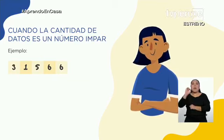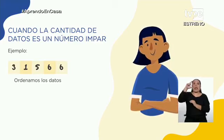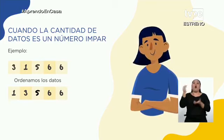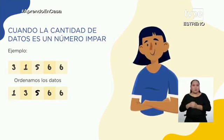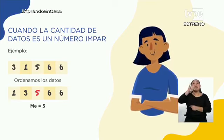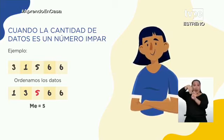Puedes hacerlo tú en tu hoja de papel también. Entonces escribimos primero 1, luego 3, luego 5, a continuación el 6 y otra vez 6. Si aparece dos veces, dos veces lo escribimos. Paso número 2: ¿qué valor se ubica en el centro? El 5. Entonces decimos que el valor que ocupa la posición central cuando nuestros datos están ordenados es la mediana, y su valor es 5. La mediana, a la cual representamos por las letras Me, es igual a 5.